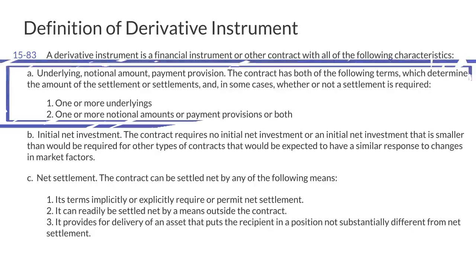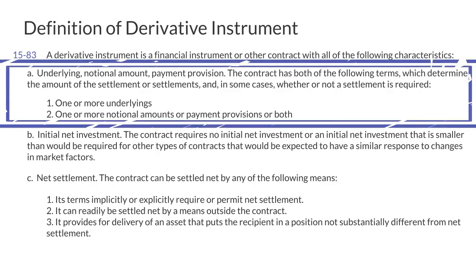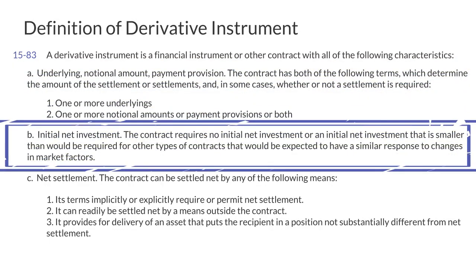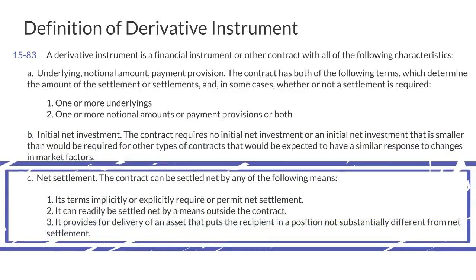1. The contract must have an underlying and a notional amount or payment provision, or both. 2. The contract requires no initial net investment or a small initial net investment. And 3. The contract requires or permits net settlement.